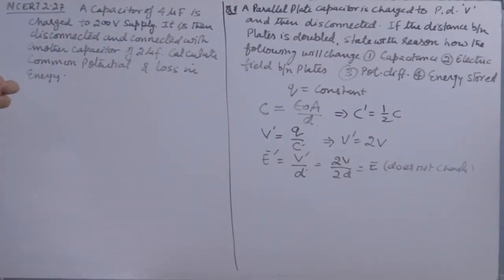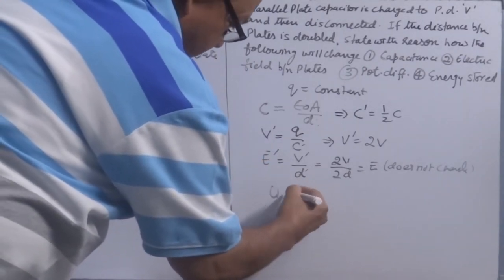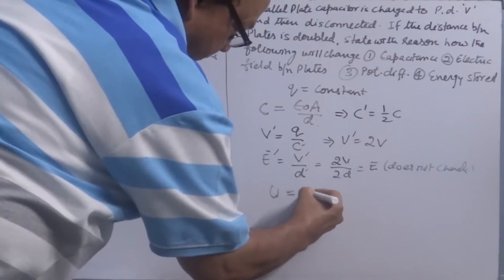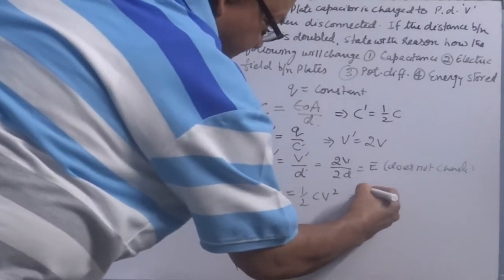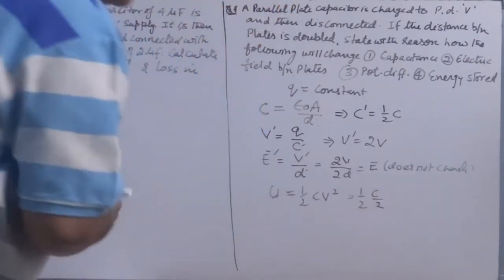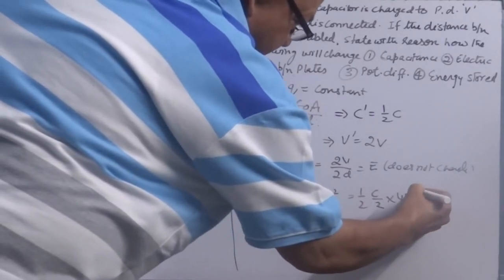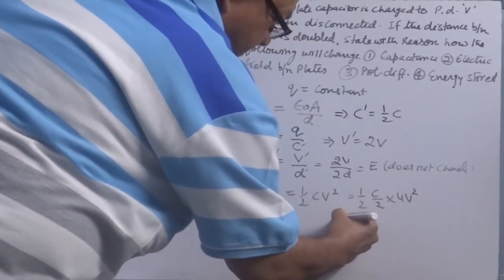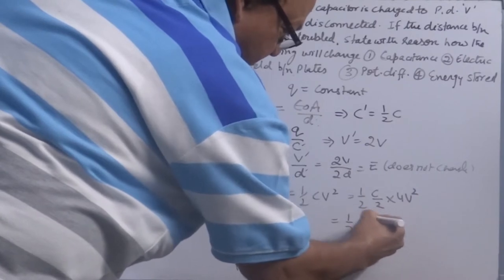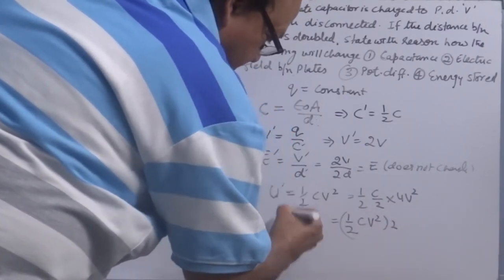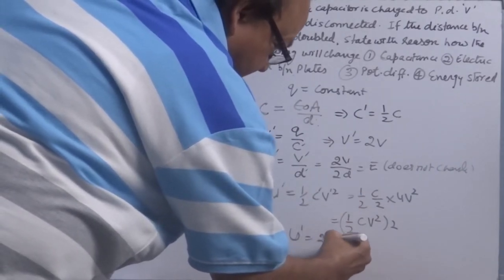Energy stored U = ½CV². The new capacitance is C/2 and the new voltage is 2V, so U' = ½ × (C/2) × (2V)² = ½ × C/2 × 4V² = ½CV² × 2. Therefore U' becomes twice the original energy stored.